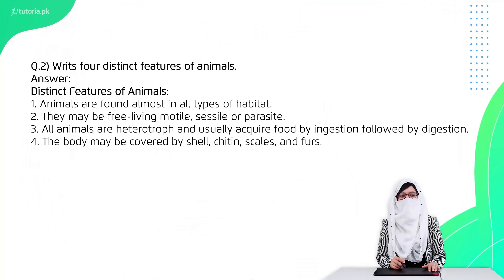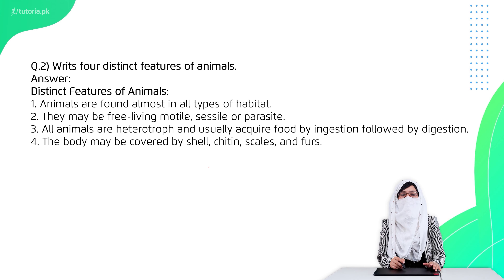Now start with the short questions. The first short question is: write the four distinctive features of animals. The first distinctive feature is they are found in all habitats. They are free, motile, sessile, and heterotrophs.